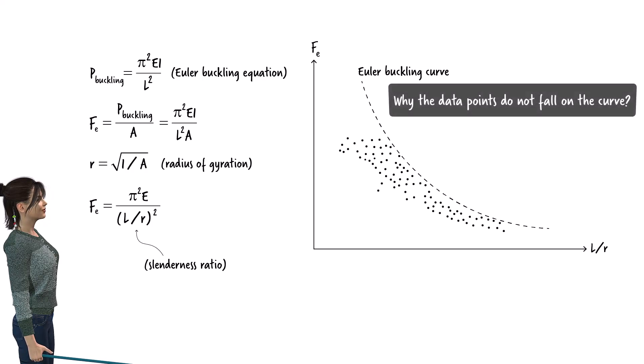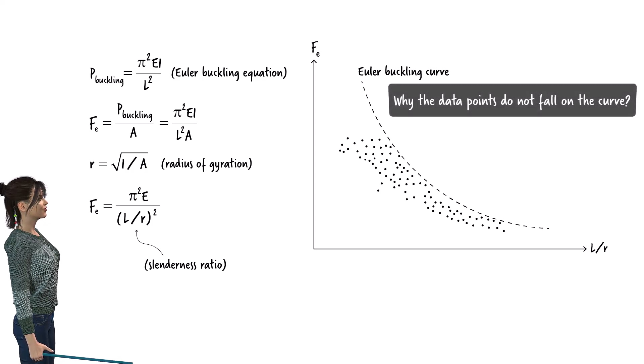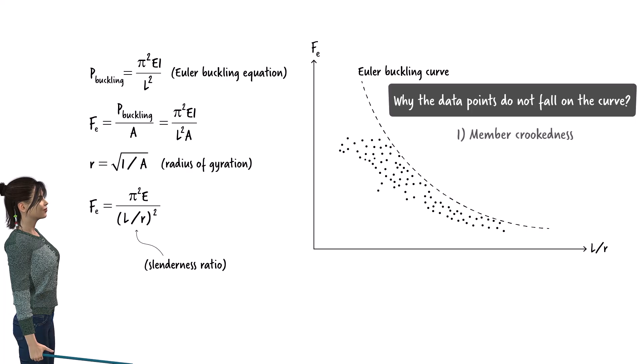There are two main reasons for this mismatch between the theory and the experimental data. The theory assumes a perfectly straight compression member. In practice, however, such perfection cannot be achieved. Due to the fabrication process, steel members generally have a slight crookedness that adversely impacts their buckling strengths.